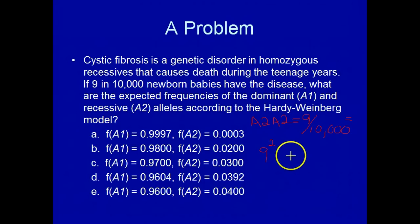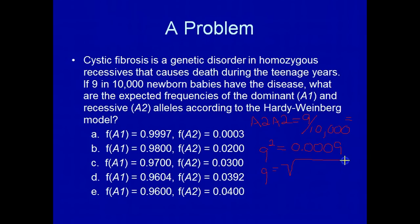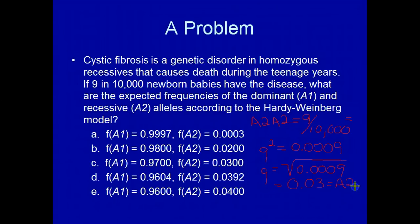We know that A2, A2 is equal to Q squared, or the frequency of homozygous recessives. So Q squared, if we divide 9 by 10,000, is 0.0009. In order to get Q, we take the square root of 0.0009, which is equal to 0.03. This is equal to the frequency of the A2 allele in the population.